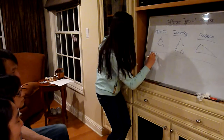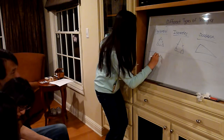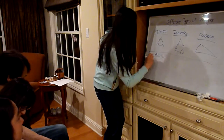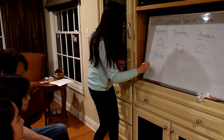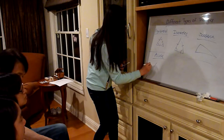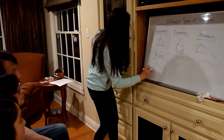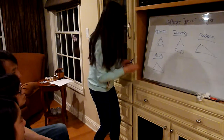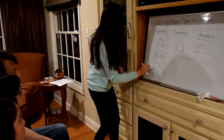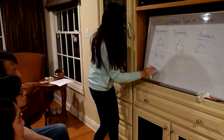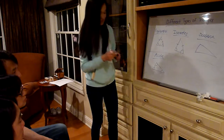So an acute triangle has all angles that are less than 90 degrees — this angle is less, this is less, and that is less.